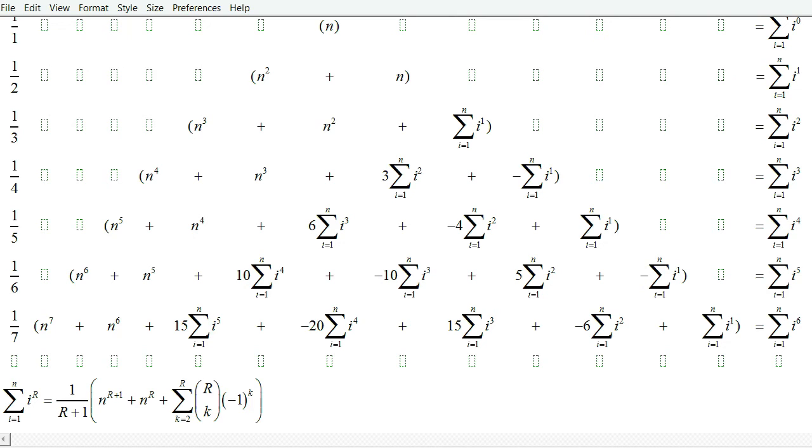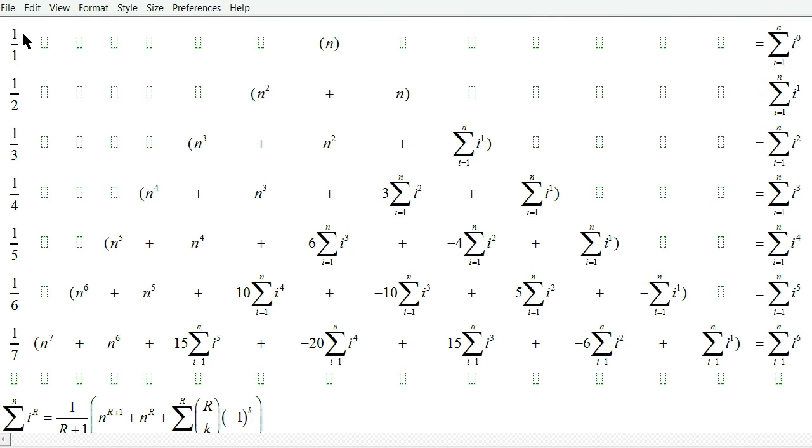But when the column number is odd, this k will be an odd number. And minus 1 to an odd power is negative.